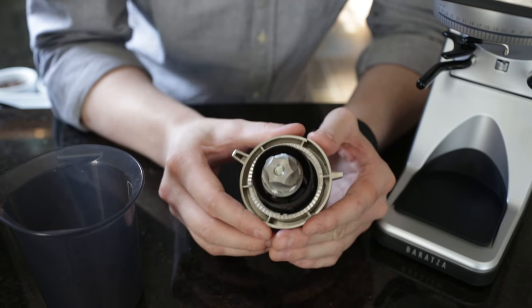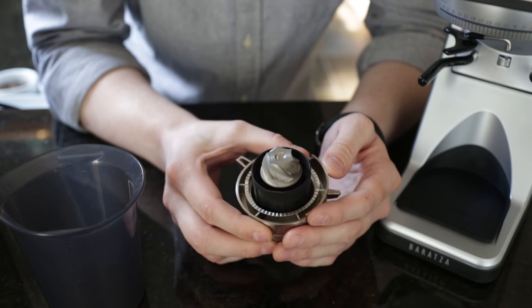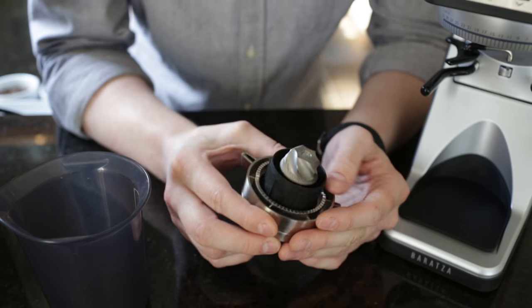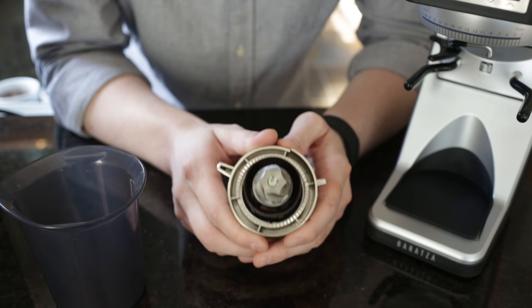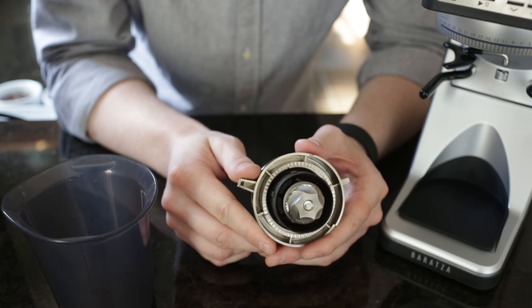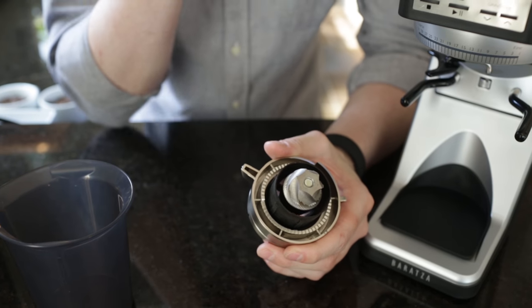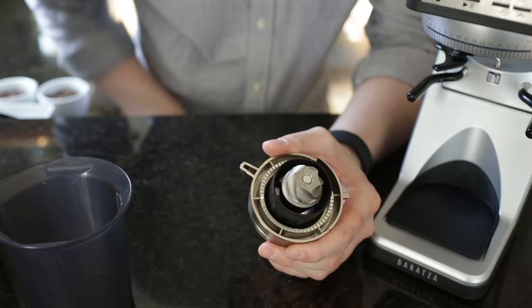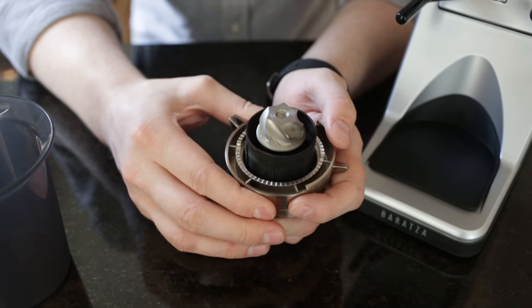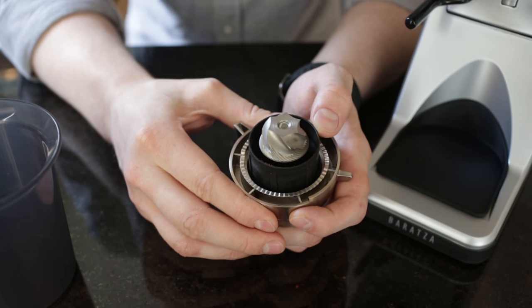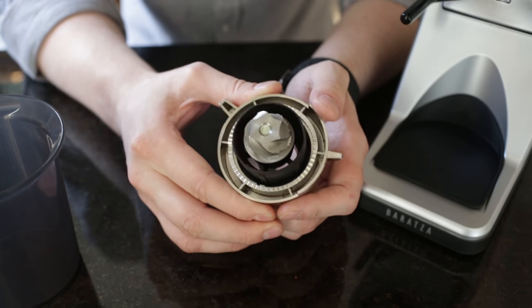That's really exciting for home users, because if you're switching beans often, or you just like to single dose, or you're just conscious about how much coffee you're wasting, the Sette is going to be a really great option for a low-retention grinder. That Etzinger mechanism also has a pretty interesting effect on the grind profile and the flavor profile that you get. It's a much more uniform grind and much more clear flavor profile in most drip brews and especially in espresso.